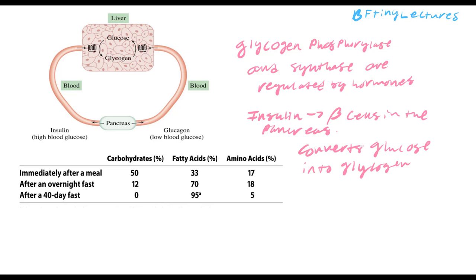Did we create something or destroy something? We created a glycogen molecule from glucose, so insulin is called an anabolic hormone. Insulin increases the uptake of glucose in the muscle and stores it as glycogen. The liver holds 90% of the glycogen in the body, and about 10% is in the muscles.